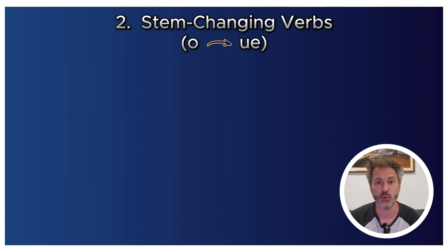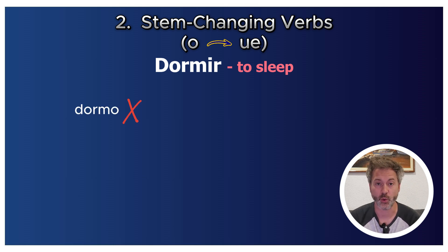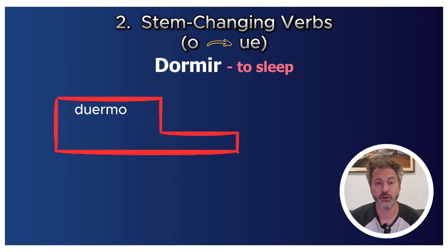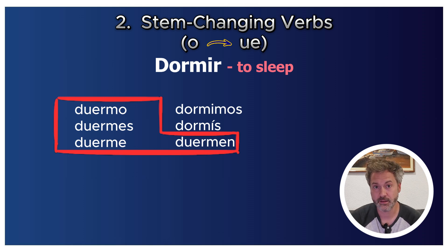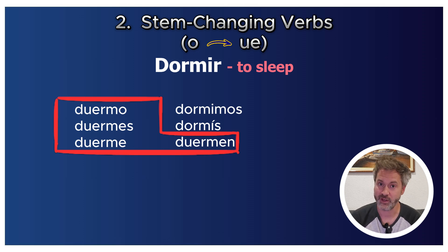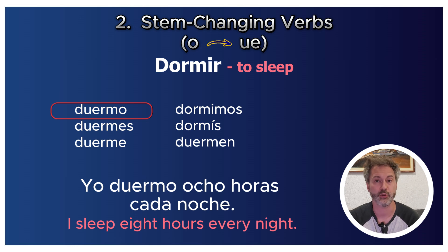The second stem change is O to UE. A good example is dormir: instead of 'yo dormo,' the O changes to UE giving 'yo duermo.' Full conjugation: tú duermes, él/ella/usted duerme, nosotros dormimos, vosotros dormís, ellos/ellas/ustedes duermen — always looking like a boot. For example: 'Yo duermo ocho horas cada noche' — I sleep eight hours a night.